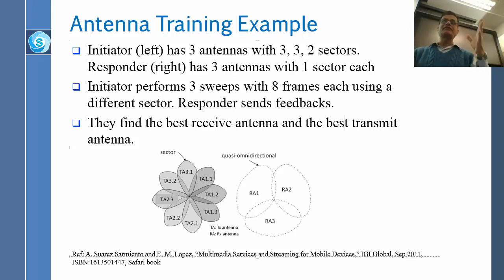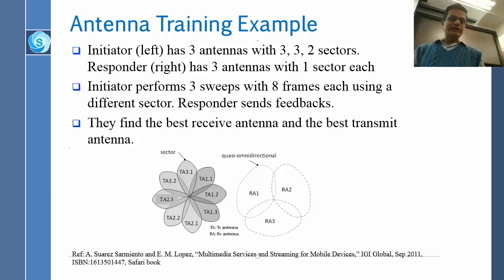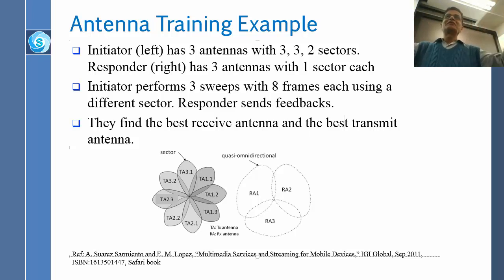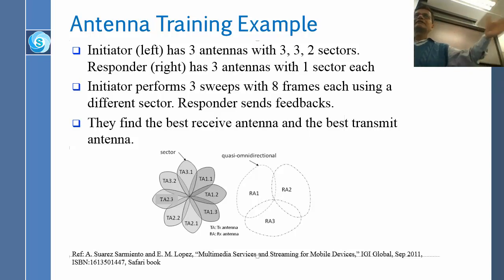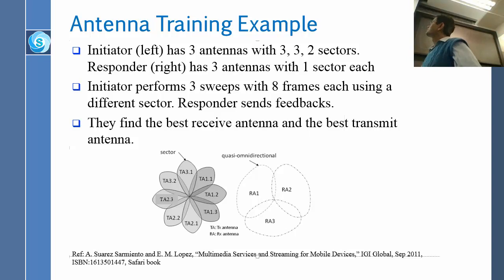Not all antennas have to have an equal number of sectors. For example, on a device, very few things will be talking from the back, and most things will be talking from the front. So there is no need to have too many sectors in the back, but in the front we want to be much more precise. The idea is that not every antenna configuration will have an equal number of sectors — sectors could differ from antenna to antenna: a three, three, two example.